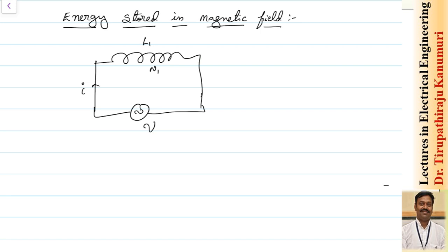Whenever the current passing through a coil is changing, the EMF will be induced in this coil to oppose the change in the current, because it will not allow a change in the value of the magnetic field. The EMF will be given by e equal to the rate of change of flux linkages, that means d/dt of the flux linkages.